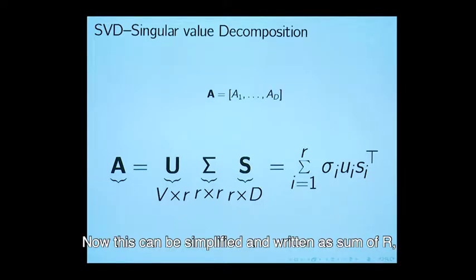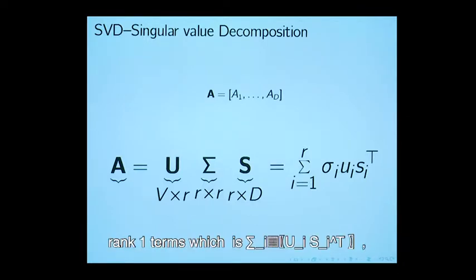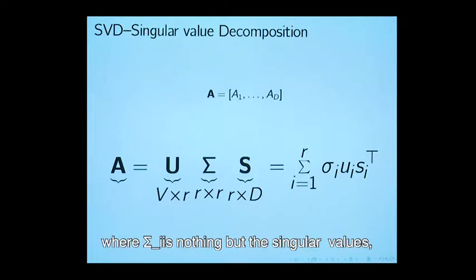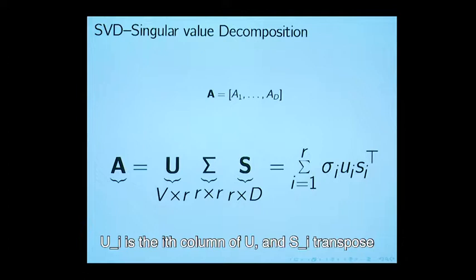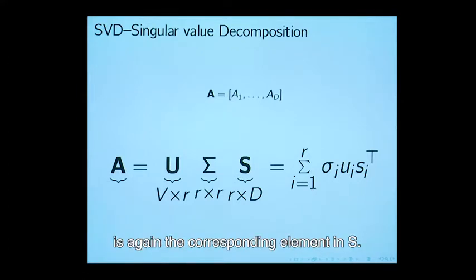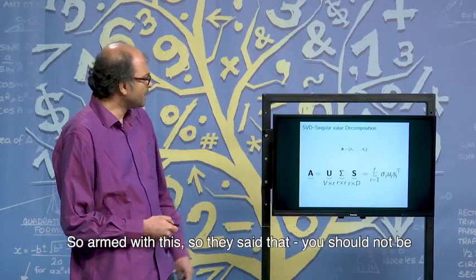A can be written as, this can be simplified and written as sum of R rank 1 terms, which is sigma i, u i, s i t, where sigma i is nothing but the singular values, u i is the ith column of U, and s i transpose is again the corresponding element in S.